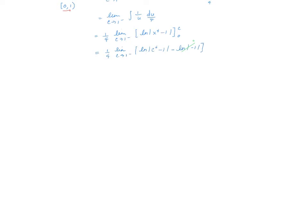Evaluating this limit: as c approaches 1 from the left, c to the fourth minus 1 approaches 0 from the positive side, so we're taking the natural log approaching zero from the right, which goes to negative infinity. So this is one-fourth times negative infinity, which is negative infinity, and the integral diverges.